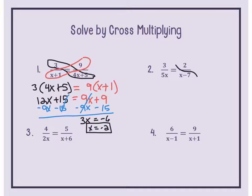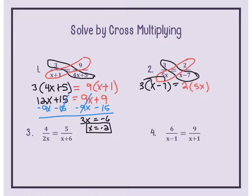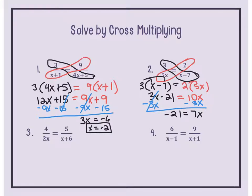Question number 2: cross-multiply again. We cross-multiply to get rid of the denominators: 3 times x minus 7 equals 2 times 5x. On the left, distribute the 3 to get 3x minus 21. On the right, distribute the 2 to get 10x. Move the 3x by subtracting from both sides, leaving negative 21 equals 7x. Divide by 7 on both sides: x equals negative 3. Plugging negative 3 into the denominators gives no division by 0, so that is the solution.